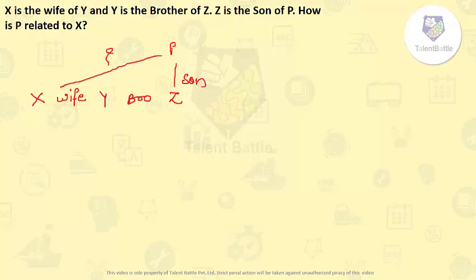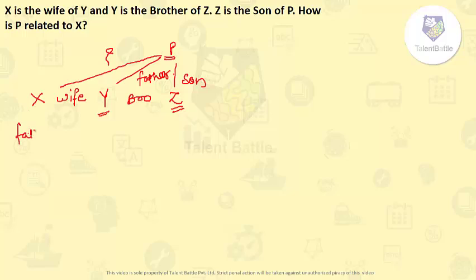P is the father of Z, and Z is the brother of Y, so P is also the father of Y. Since X is the wife of Y, P is also going to be related to X — but it will be as father-in-law. So the answer is father-in-law.